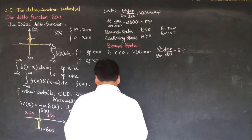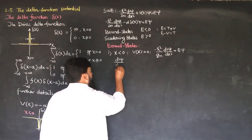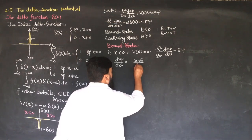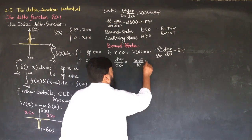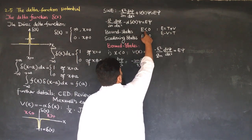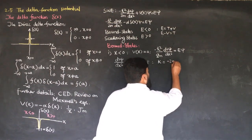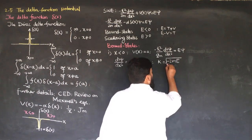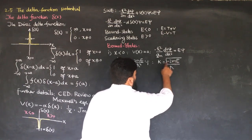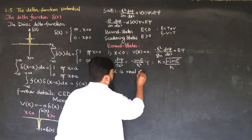This can be rewritten as d²ψ/dx² equals minus 2mE over h-bar squared, times ψ. For a bound state, I consider E to be negative. I define k such that k equals the square root of minus 2mE over h-bar. Since E is negative, the two negatives cancel, and k is real and positive.